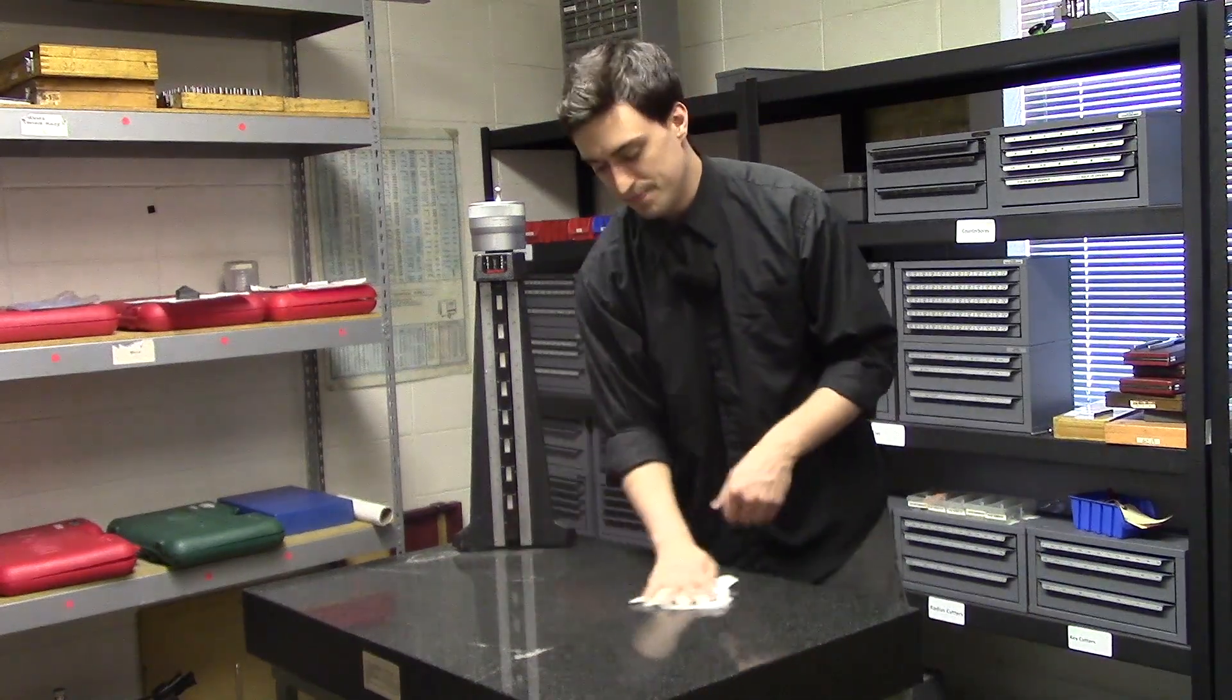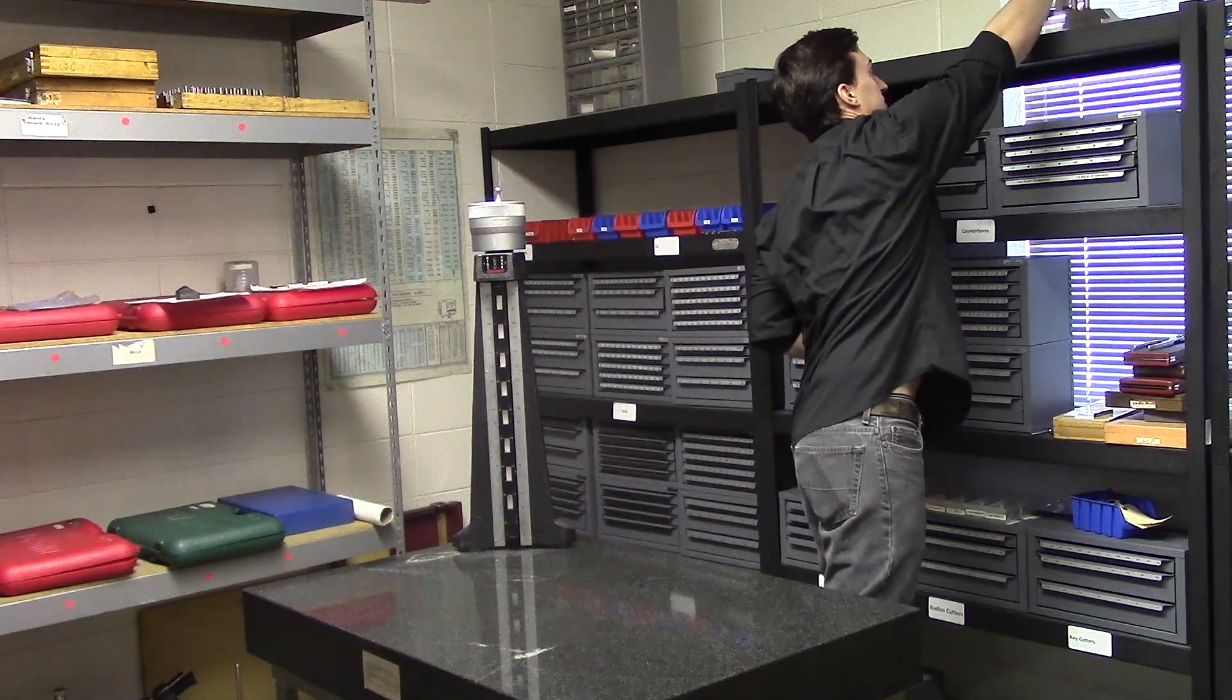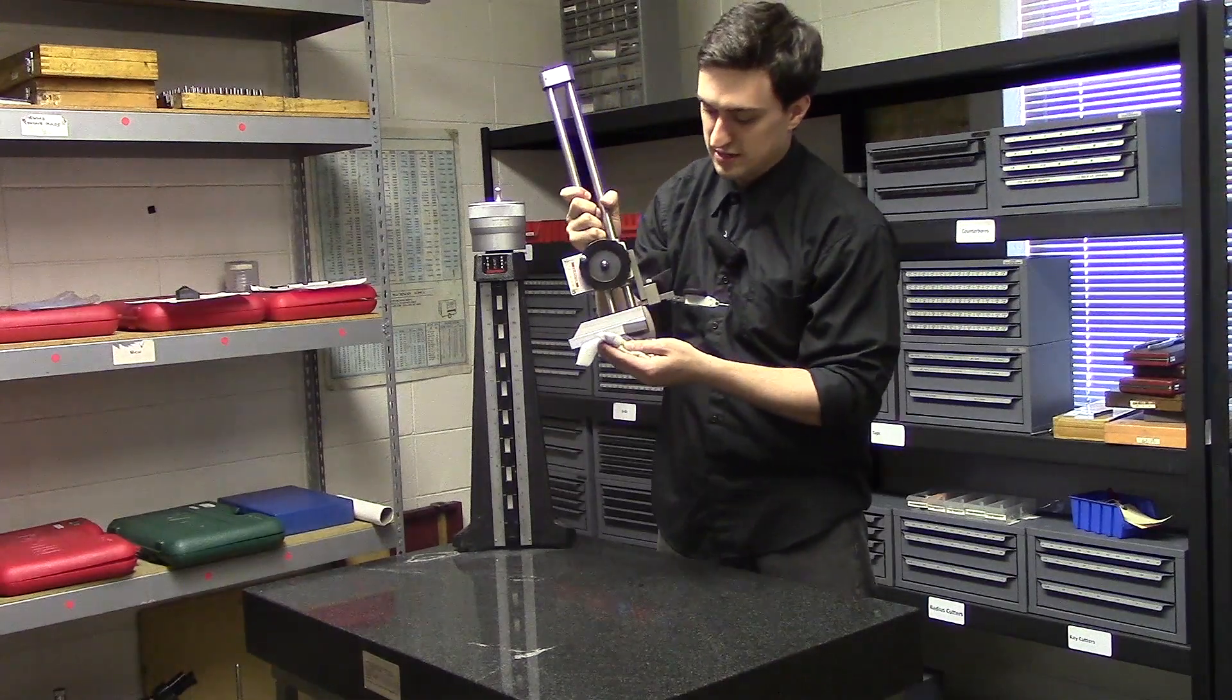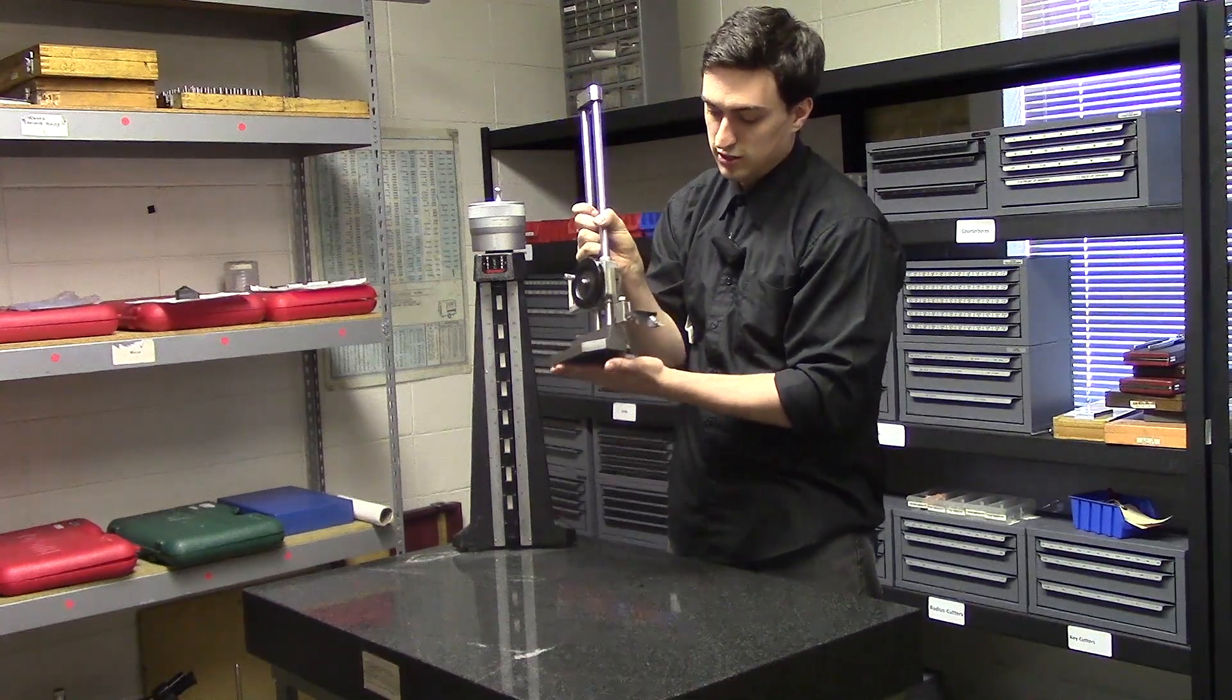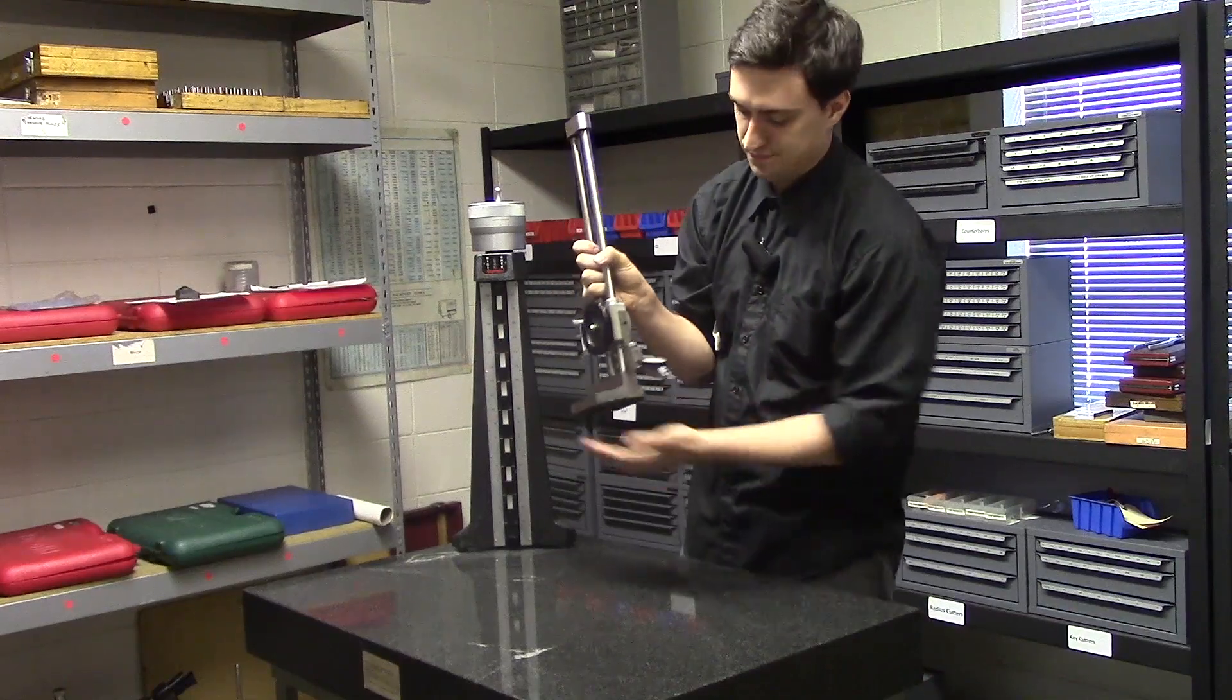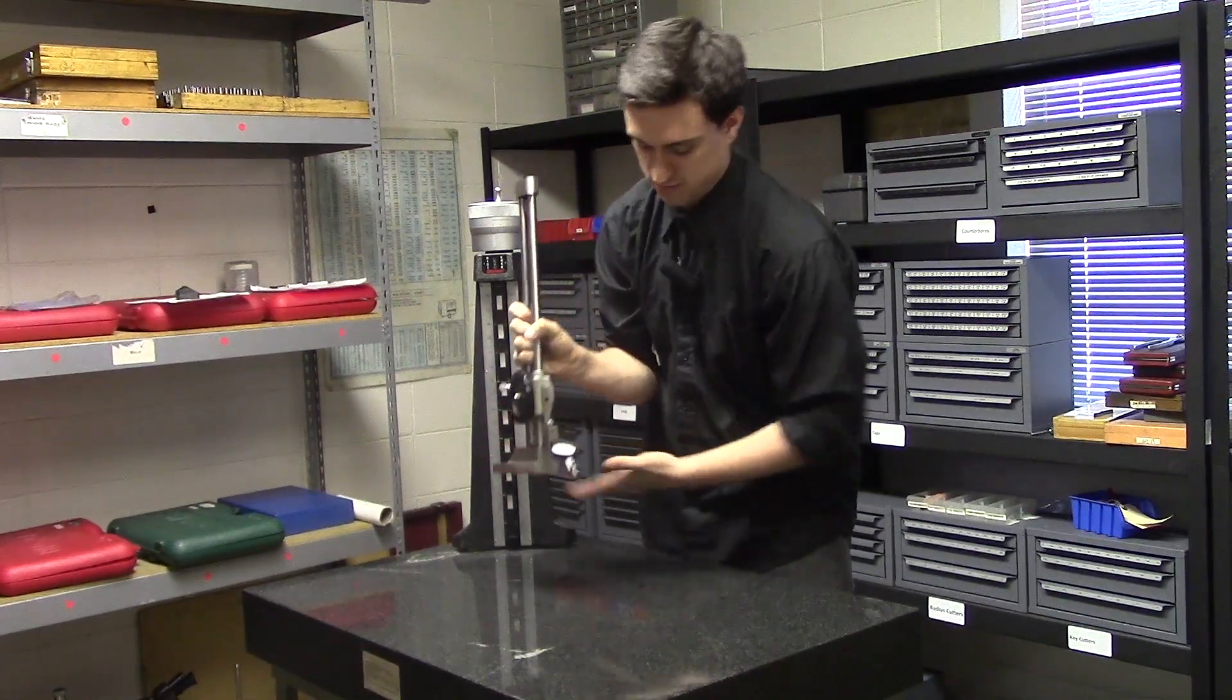Things that you are going to need is an indicator with an indicator base. Make sure that the bottom of the indicator base and everything is clean. You want to take your hand and wipe it. And your hand as long as your hands are somewhat clean are a good cleaning utensil because of all the pores and it collects the dust for the most part.